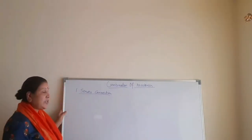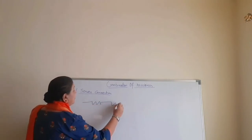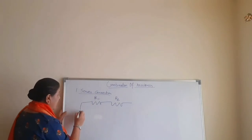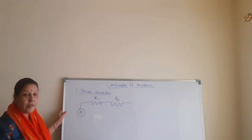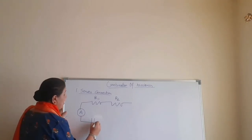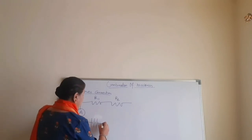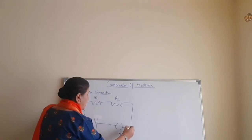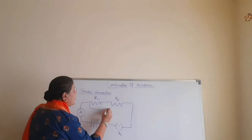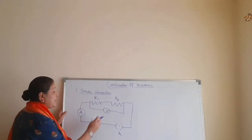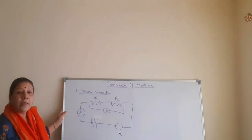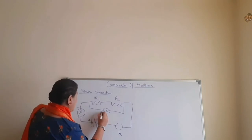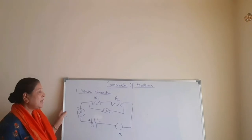Let's take the series connection. Say I have two resistances, R1 and R2. We have connected one ammeter to measure the amount of electric current flowing in it. We have one source — a battery — as a source of electric energy, and one key attached to it. That is how the simple circuit is. Across the ends of these resistors, I have connected one voltmeter also. So this is the circuit for series connection.